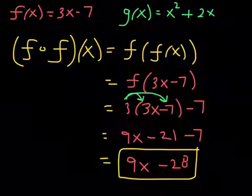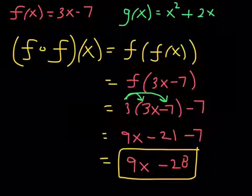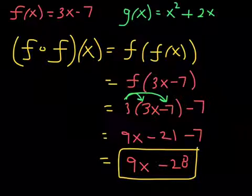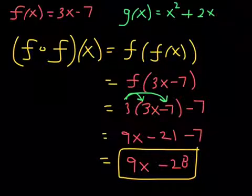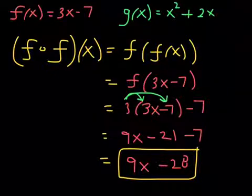Then you take 3x minus 7 and plug that expression into f. So it's 3 times 3x minus 7 and then minus 7. You see me distributing the 3, which gives me 9x minus 21. Combining like terms gives me my final answer of 9x minus 28. Alright cool, there's the function.